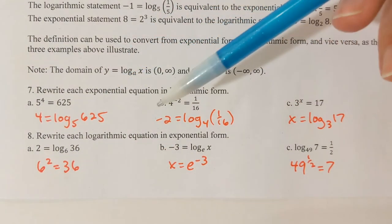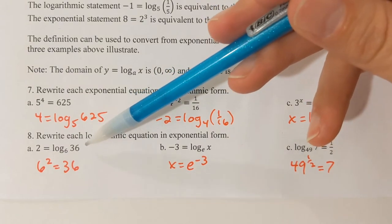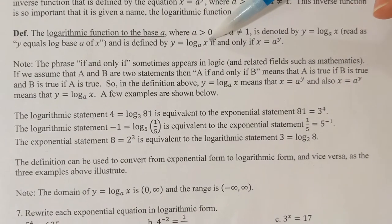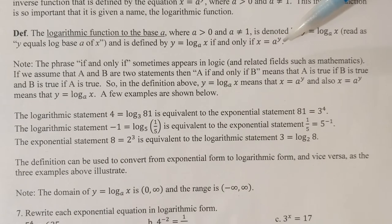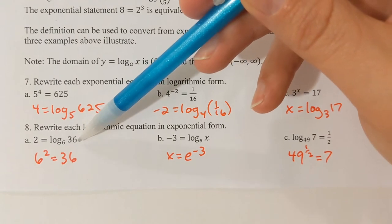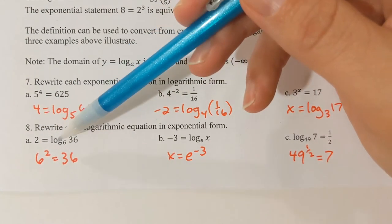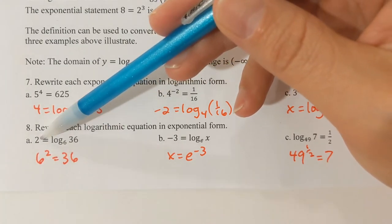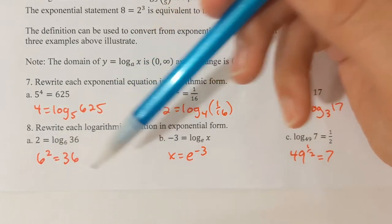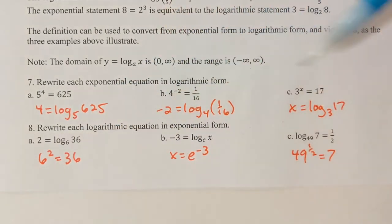Now let's go the other way. In problem 8, we have a logarithmic equation and want to rewrite it into exponential form. Right now I'm in the form y = log_a(x), and I just identify x, y, and a, then rewrite into x = aʸ. For the first one, x is 36, the base is 6 (that's my a value), y is 2. So x = aʸ means 36 = 6². Six squared equals 36 — that's a true statement. So 2 = log_6(36) means exactly the same thing.